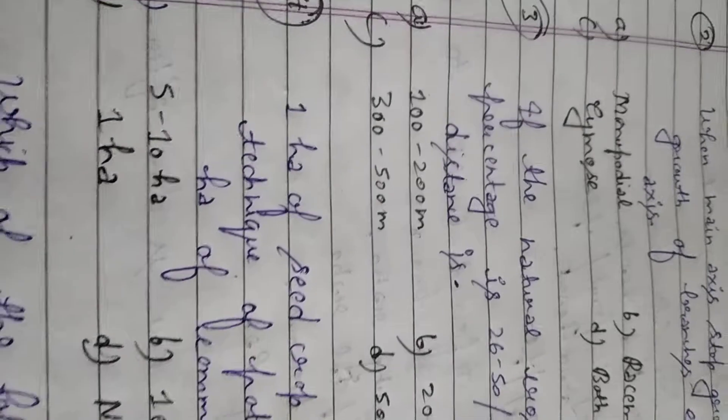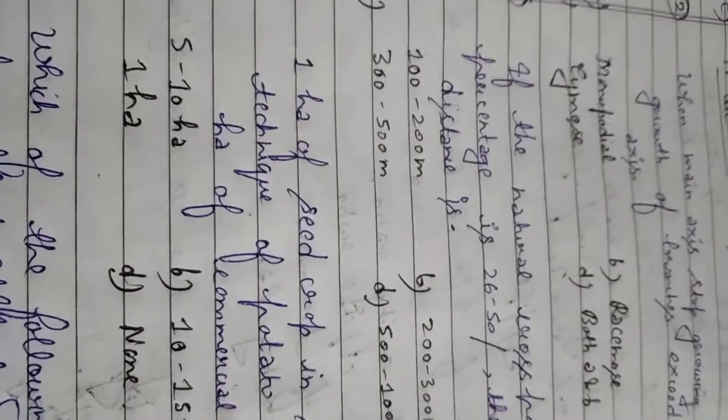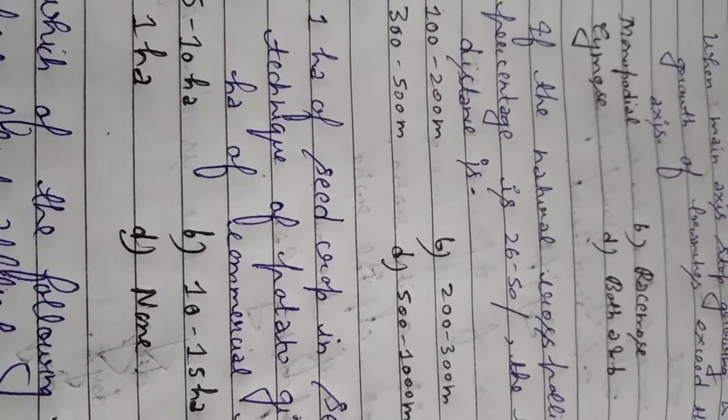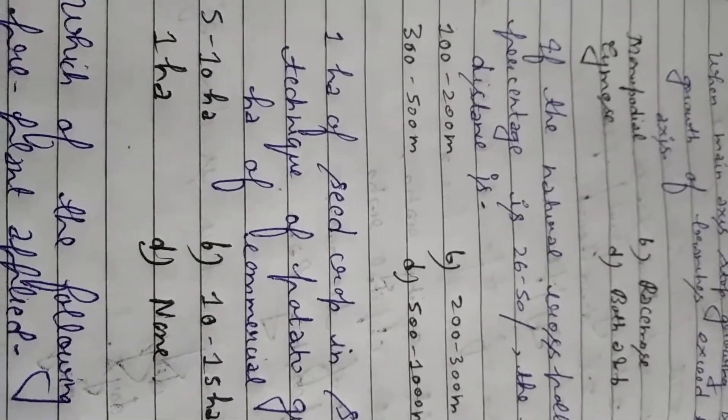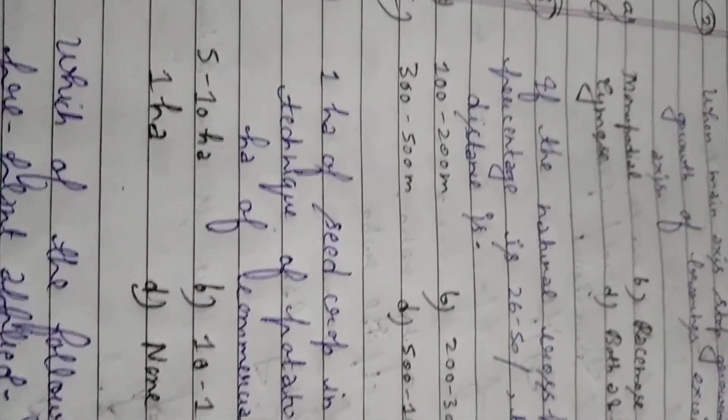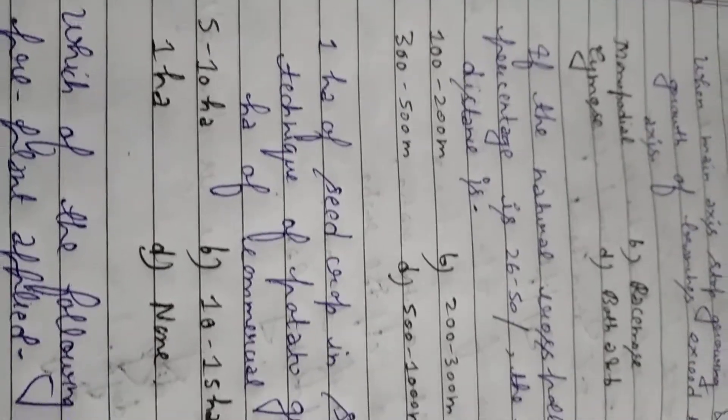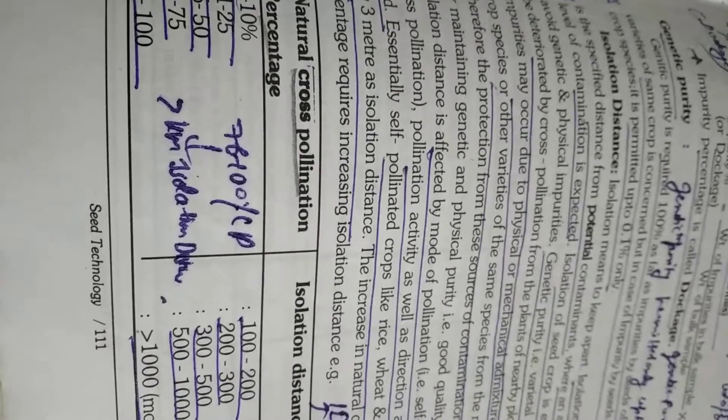Student question number 3. If the natural cross-pollination percentage is 26 to 50% then isolation distance is. Student this question I have repeated many times. You ought to remember that table. If the natural cross-pollination percentage is 26 to 50% it is given and you have to tell what is the isolation distance. Option A 100 to 200 meter, Option B 200 to 300 meter, Option C 300 to 500 meter, Option D 500 to 1000 meter.